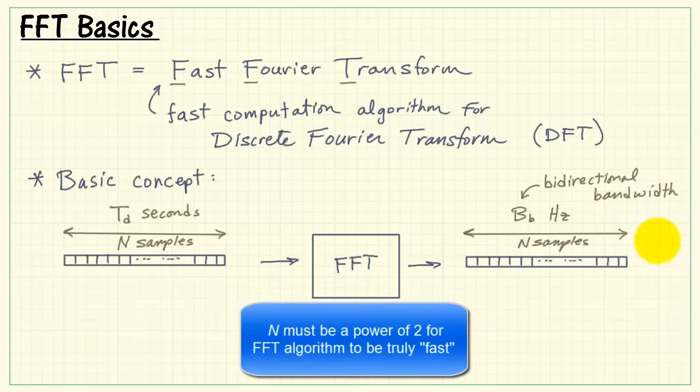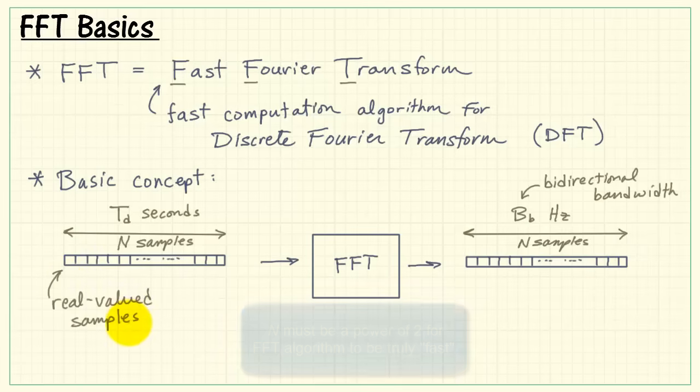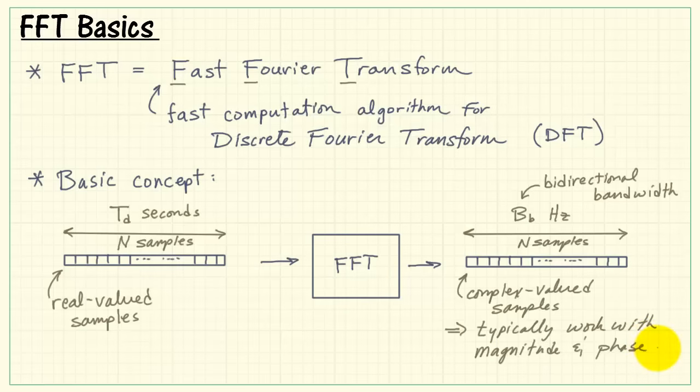Note that n must be a power of 2 for the FFT algorithm to be truly fast. On the input side, we have real-valued samples, typically, and then on the output side, we have complex-valued samples. For this reason, we normally work with magnitude and phase representations of the complex values.